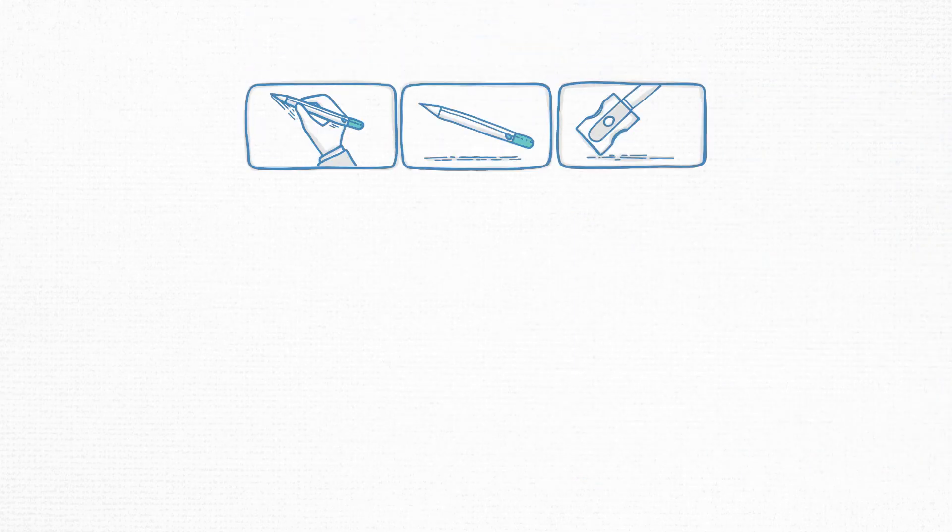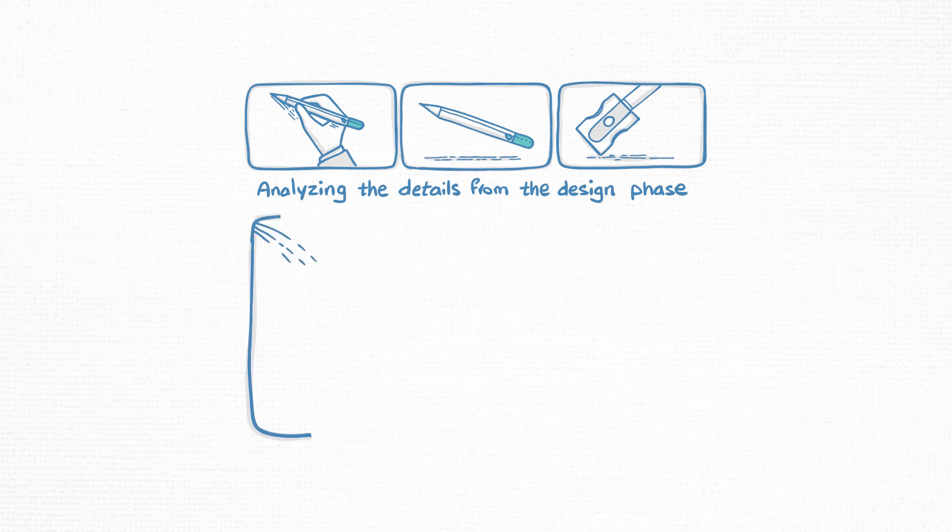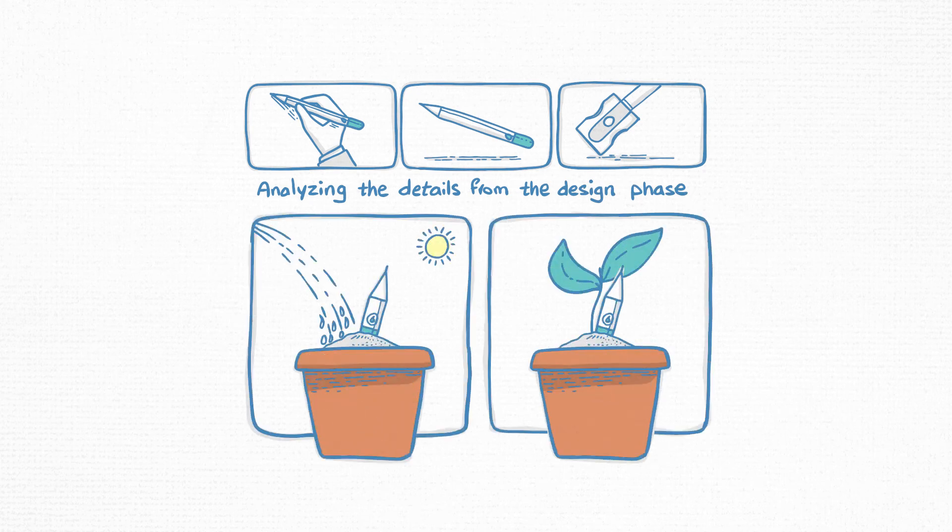This new model promotes a different production chain, analyzing the details from the design phase and thinking about how to use one product at the end of its life as raw material for another.